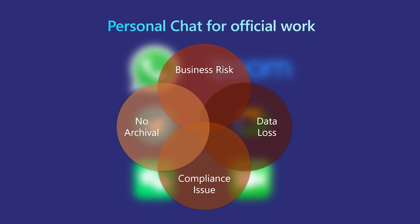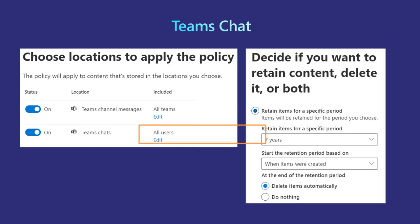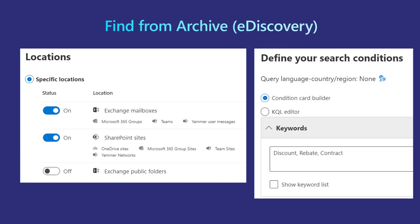That is where Microsoft Teams chat comes into the picture. Exactly like email, you can configure Teams chat to be archived for the same number of years. So in case there is a dispute or litigation, this data will help you.